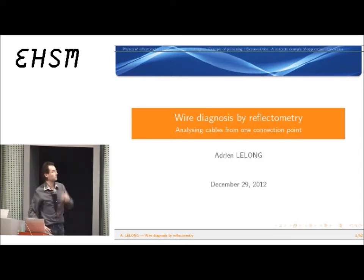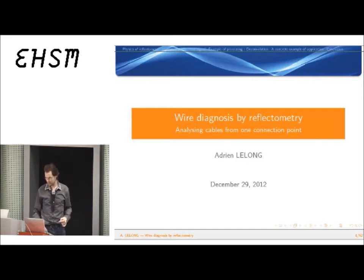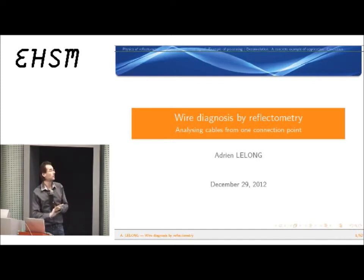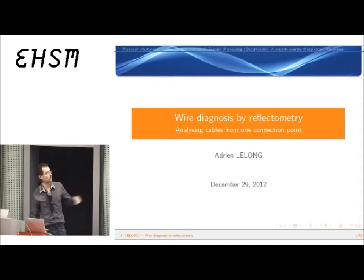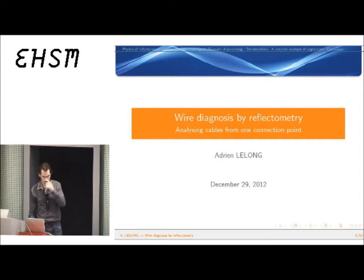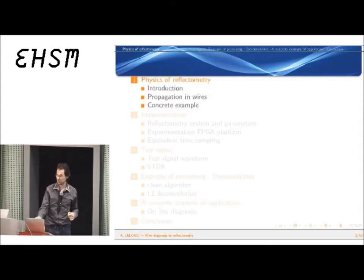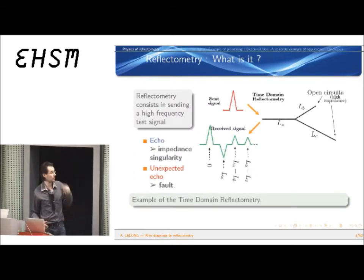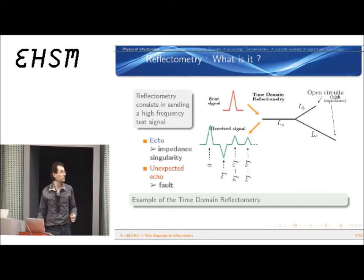I will begin with the physics of reflectometry, just to explain what we are talking about. The principle is very simple: it consists in injecting a high-frequency signal — typically a pulse or similar — into a wire, which reflects on each singularity of the wire. By singularities, I mean junctions, end-of-wire, or changes in the geometry of the wires. We get echoes by measuring the voltage, and by analyzing those echoes, we can know if there are faults corresponding to unexpected echoes.